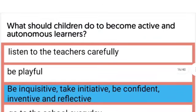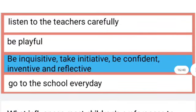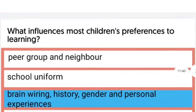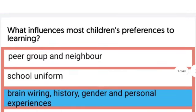What should children do to become active and autonomous learners? The right answer is be inquisitive, take initiative, be confident, inventive, and reflective. The next question: What influences most children's preferences for learning? The right answer is brain wiring, history, gender, and personal experiences.